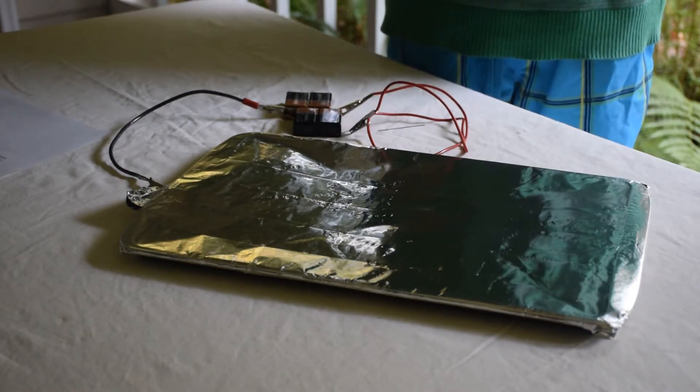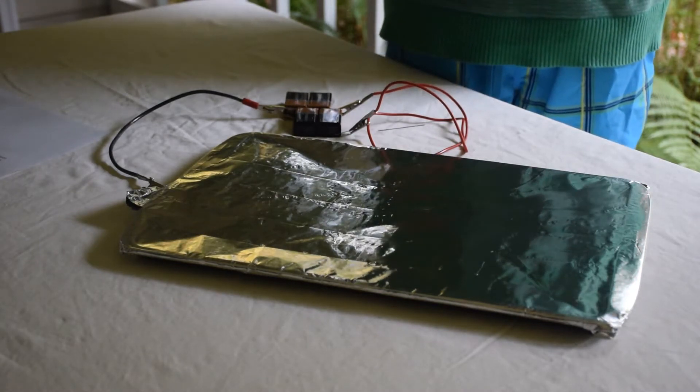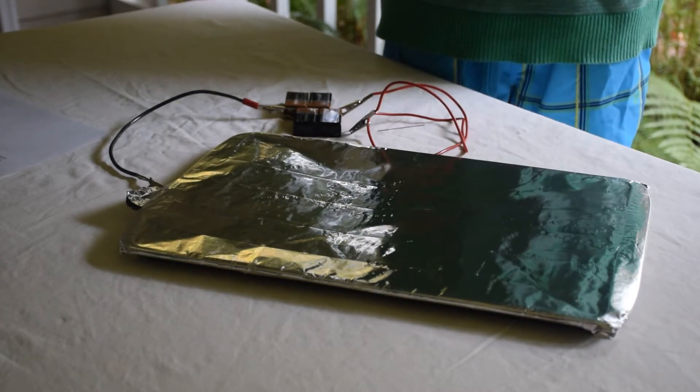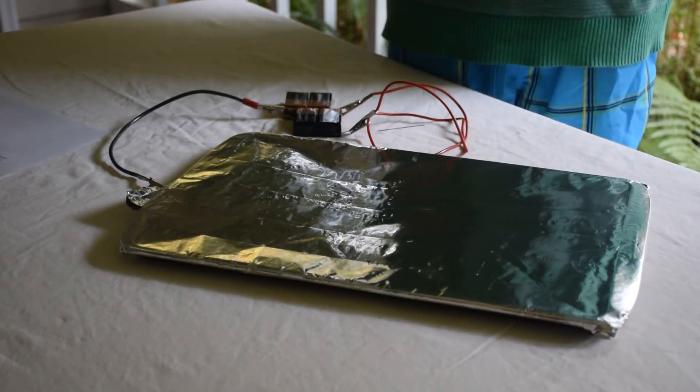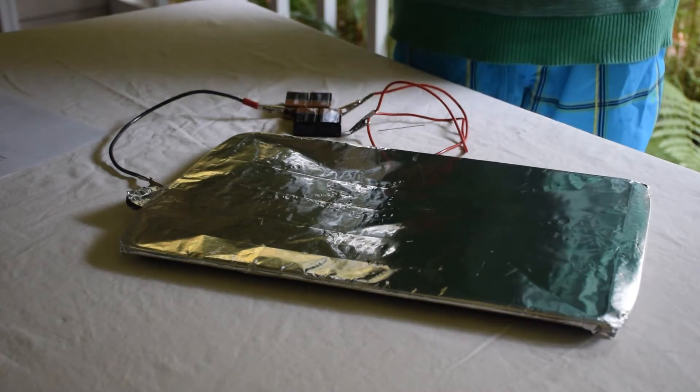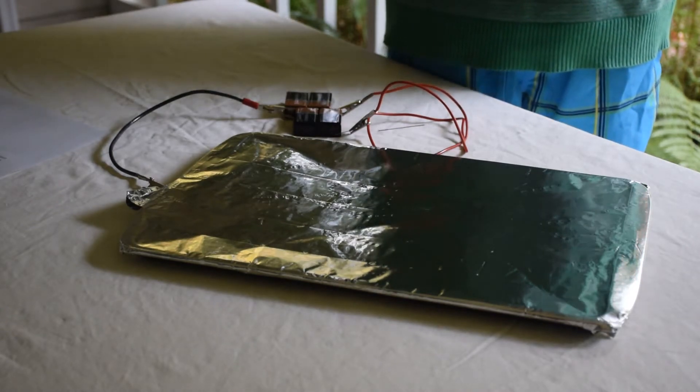Since electricity can be conducted through the graphite, when the graphite makes contact with the aluminum foil, the heat from the electricity slices right through it. Now that I've told you the science behind this, let's get cutting.